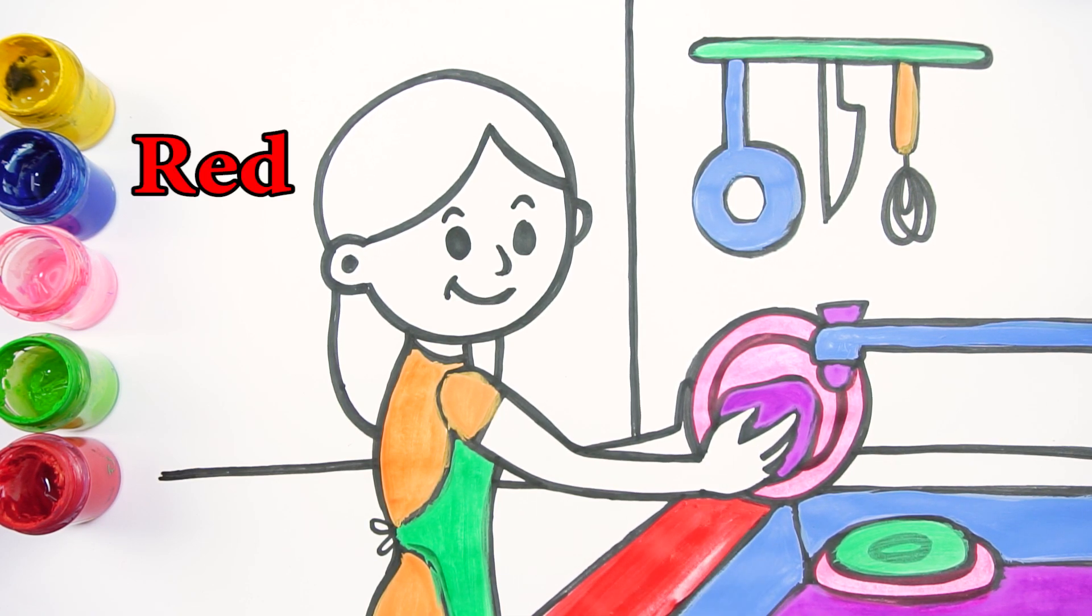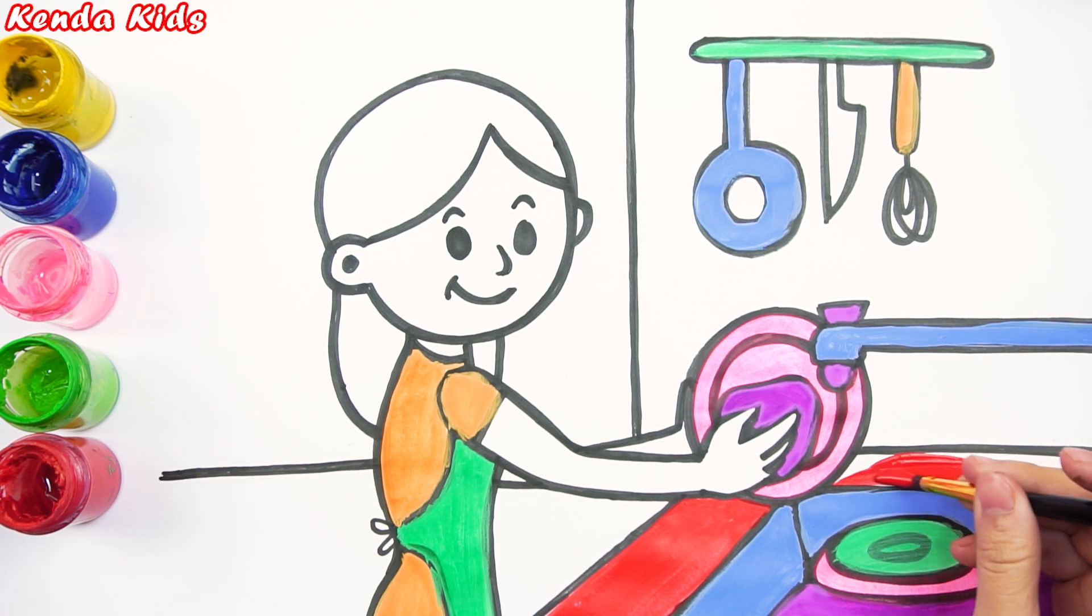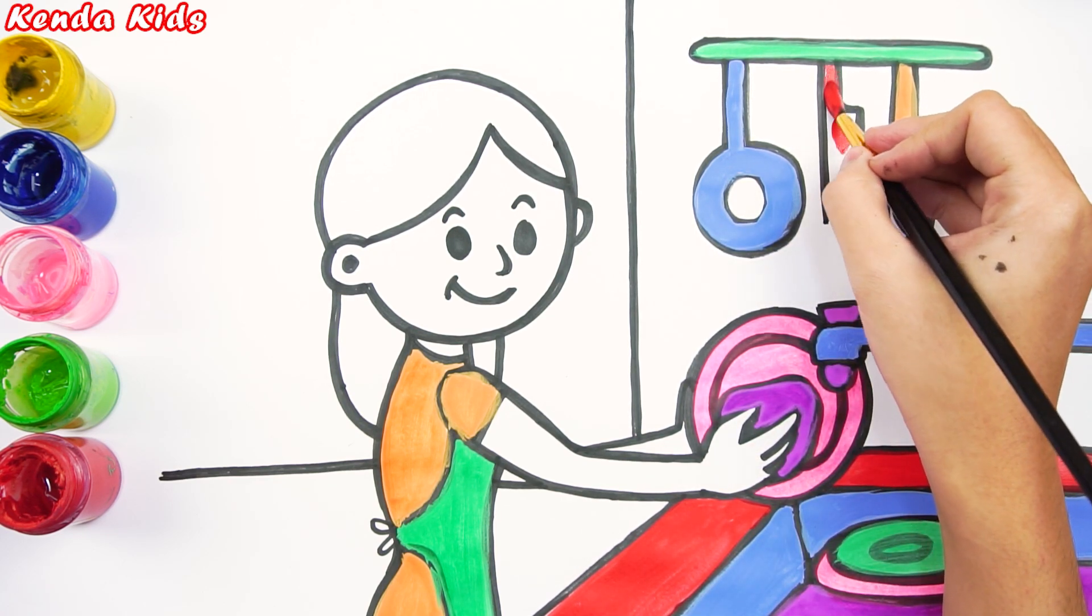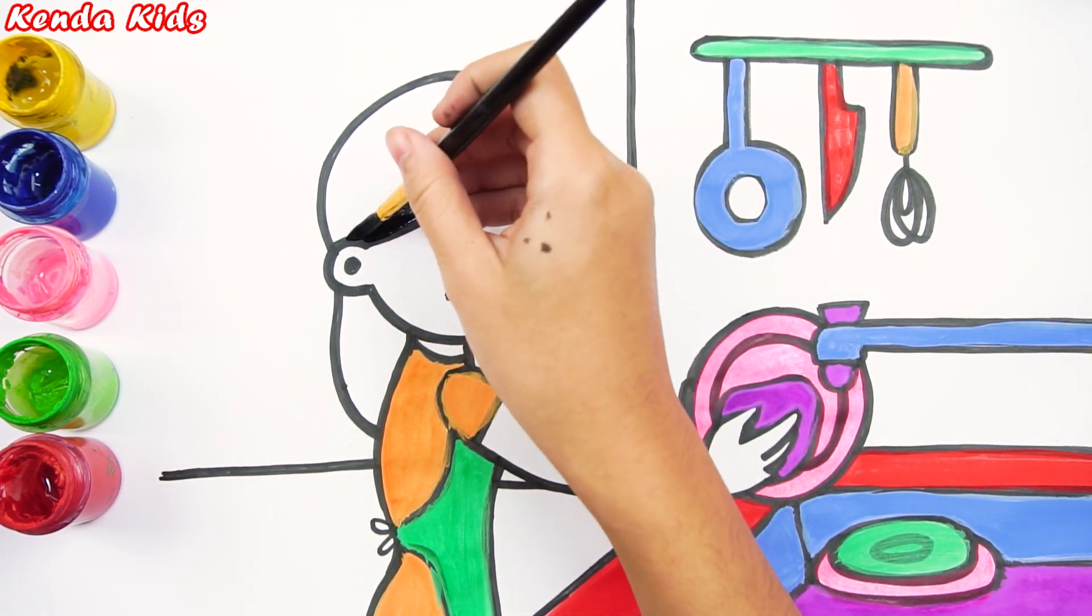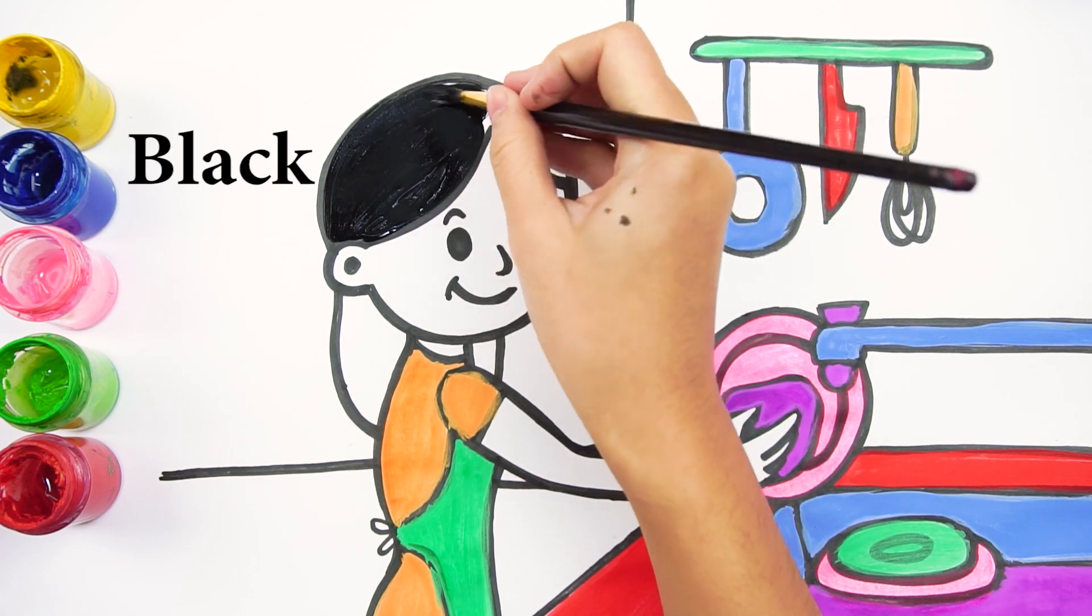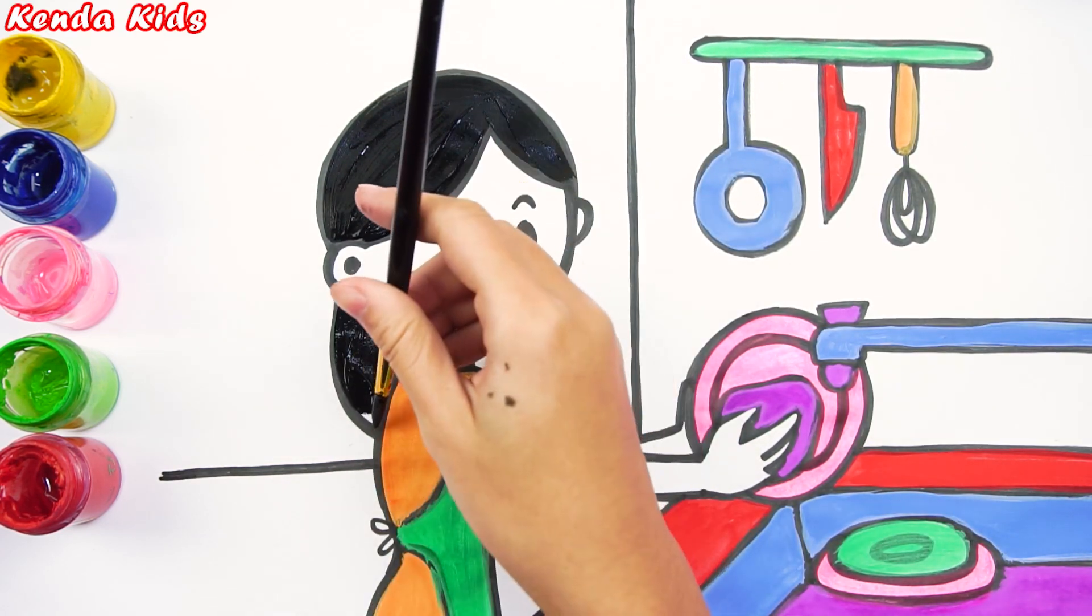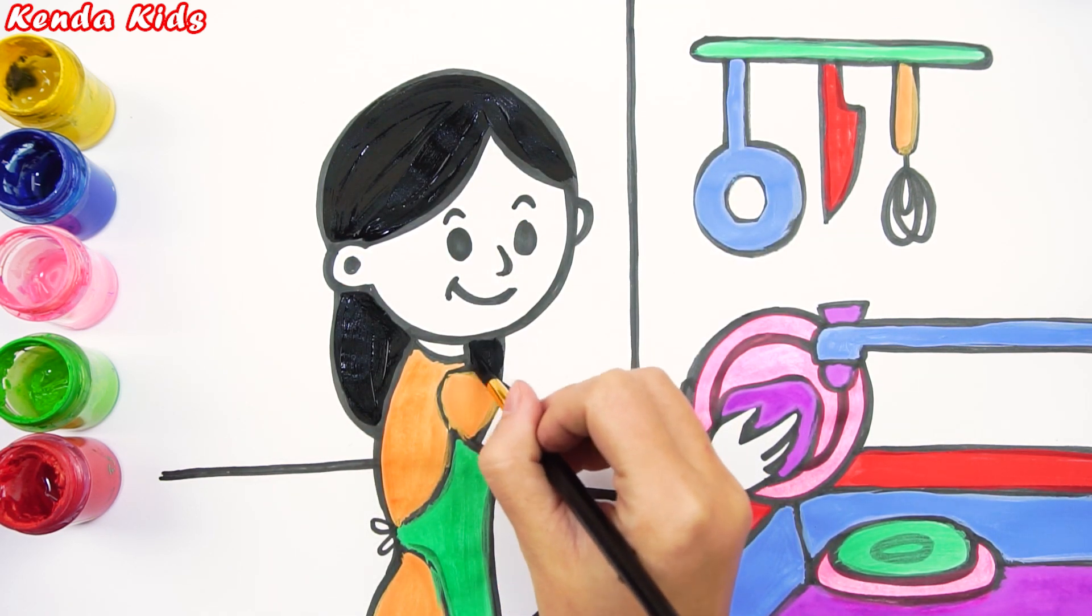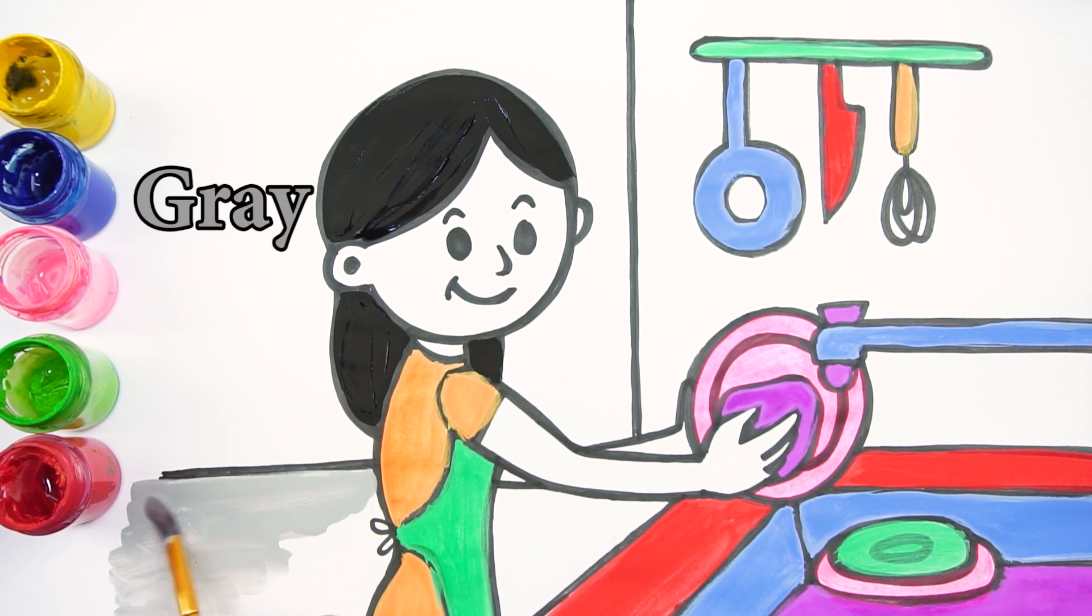I will color black for the little girl's hair, thumb with red. My dear, I will paint the floor gray.